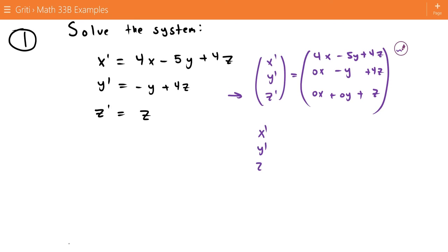So we can turn this into a product between a matrix and a vector. This will be the matrix 4, negative 5, 4, 0, negative 1, 4, 0, 0, 1. And this is times x, y, z.